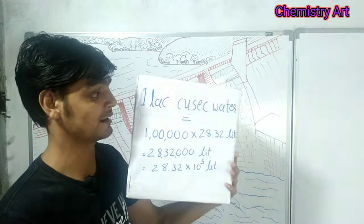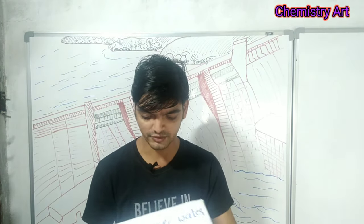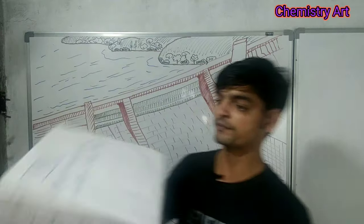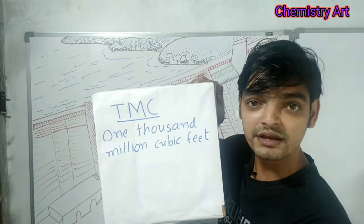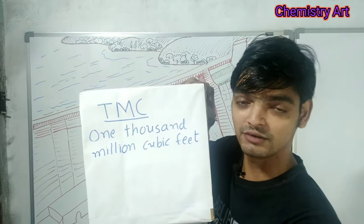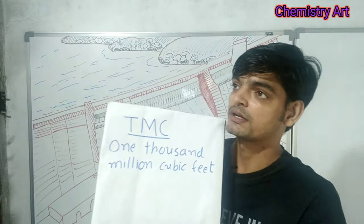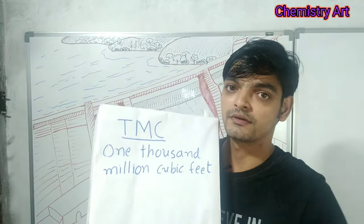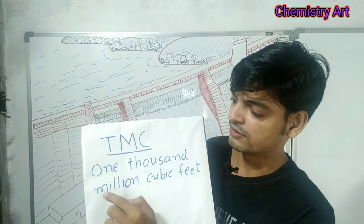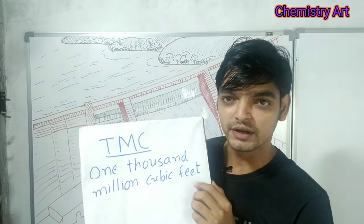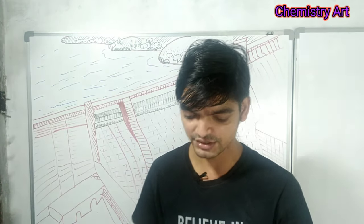Sometimes flow is also expressed in TMC. TMC means one thousand million cubic feet — that is 10 to the power 9 cubic feet, or one billion cubic feet. So when news says one TMC water is released from the dam, that is what it means. This is all about QCF and TMC.